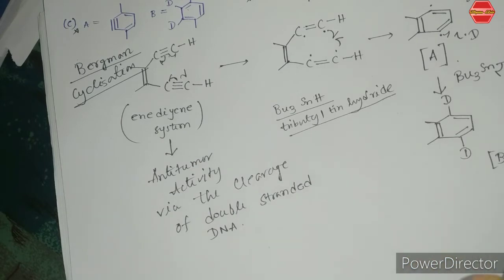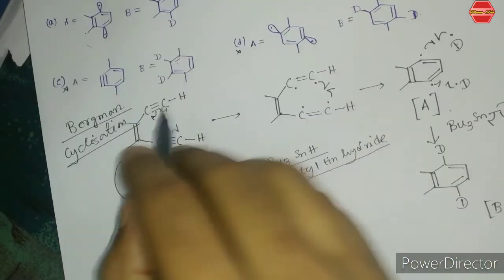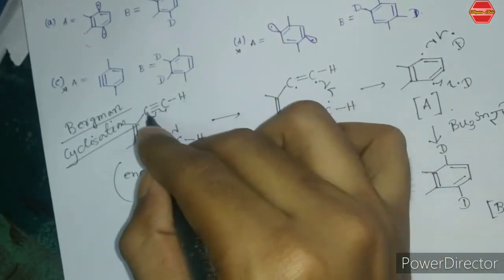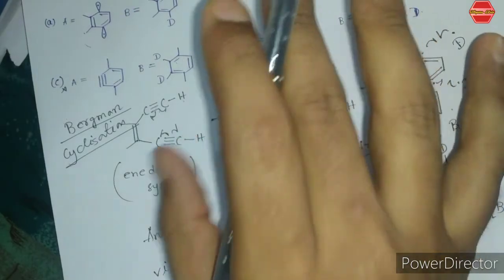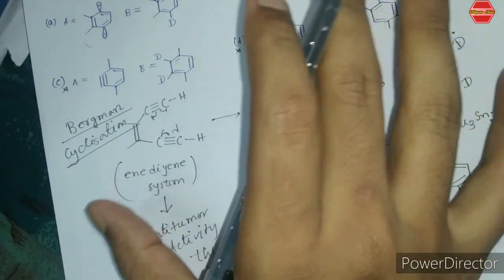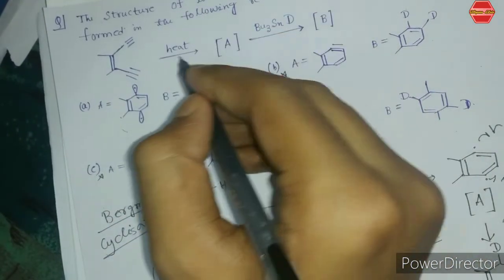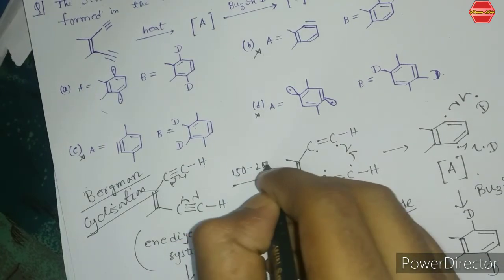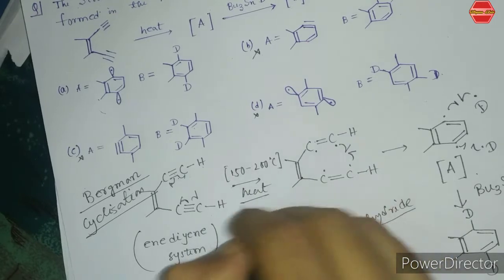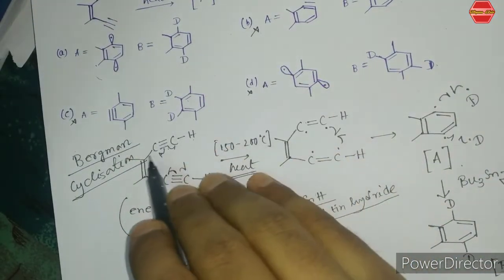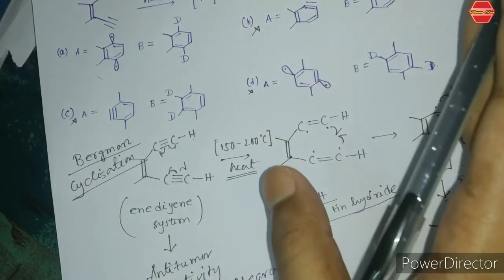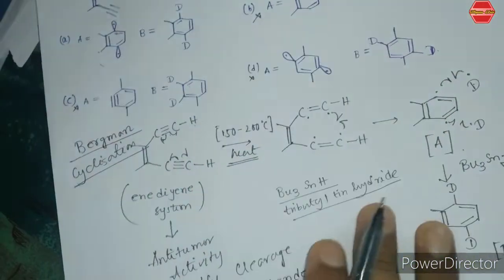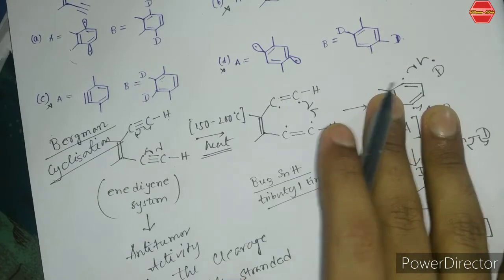Another important concept is the distance between the two triple bonds in the enediyne. If this distance increases — for example if the triple bonds are one, two, or three carbons further apart — then the Bergman cycloaromatization reaction requires a very high temperature. In general, for standard enediyne substrates the heat required is about 150 to 200 degrees Celsius.